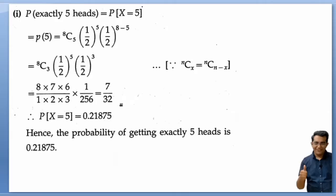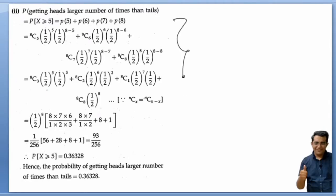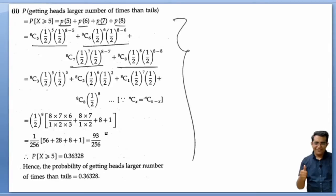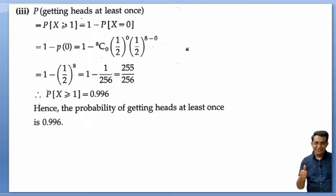This is solved. You can also write it in decimal form. The solution for the second condition — heads more than tails — gives P(5) + P(6) + P(7) + P(8). After simplifying you would get the answer, but generally such lengthy calculations do not appear in the exam.